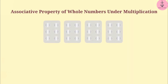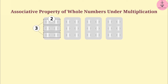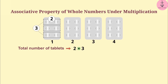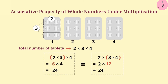Now let's talk about multiplication. Look at this picture — will you be able to tell the number of tablets by multiplication? There are two tablets in each row, so three rows will have 2 × 3 tablets. Since there are four packets, the total number of tablets is 2 × 3 × 4. A group of 2 and 3 can be made, or a group of 3 and 4 can be made. In both cases, the result is 24 tablets.